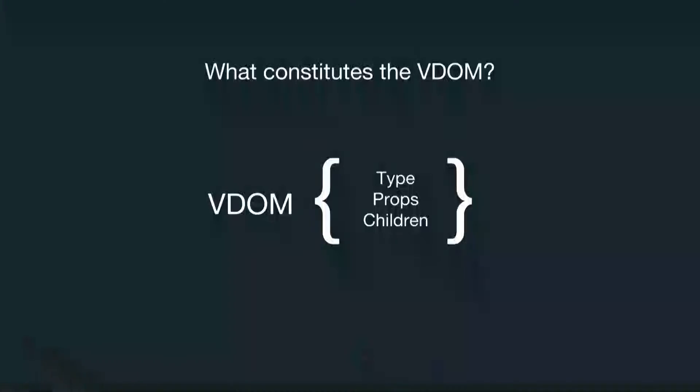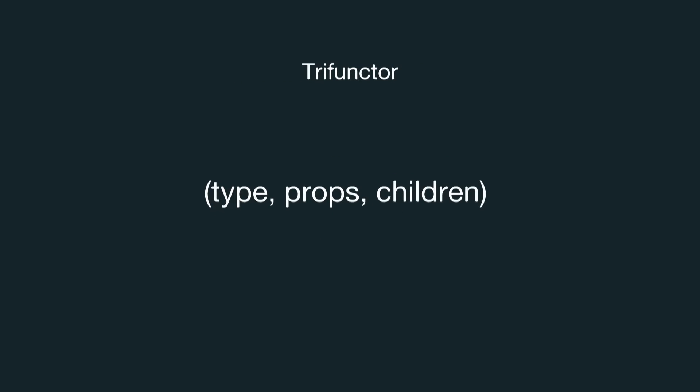I started by thinking about how this could be done differently when I heard about the React test renderer. Its output appeared to be perfect for writing a VDOM abstraction, meaning that it could write test utilities that are VDOM implementation independent. If you think about what actually constitutes a VDOM representation, we find that it's mostly about three values: props, type, and children. So it makes sense to represent it as a tri-functor, which simply means that it's a functor of three arguments — in this case a triple.